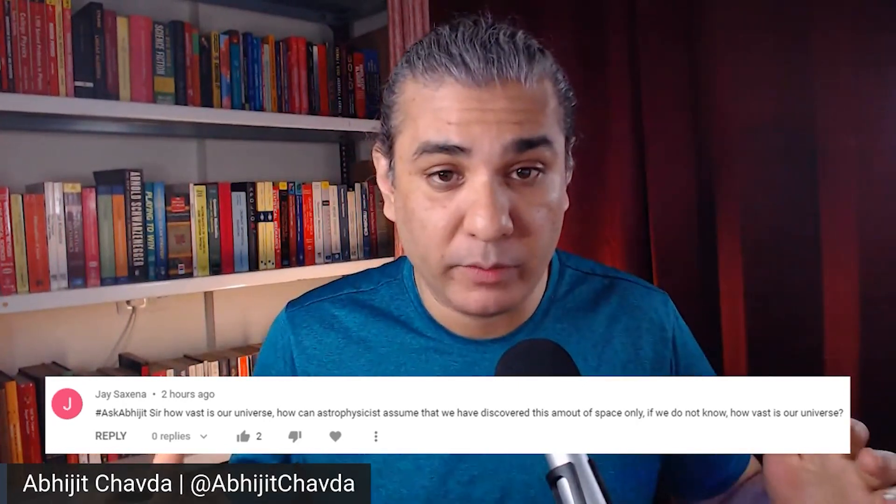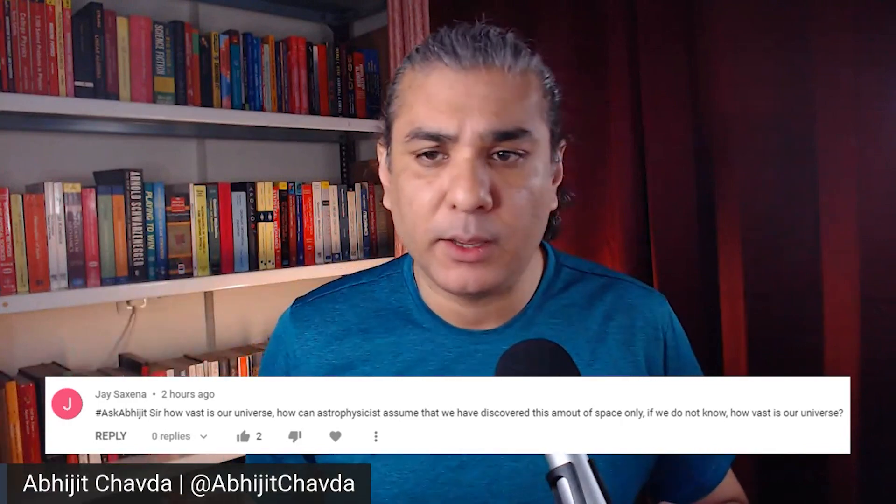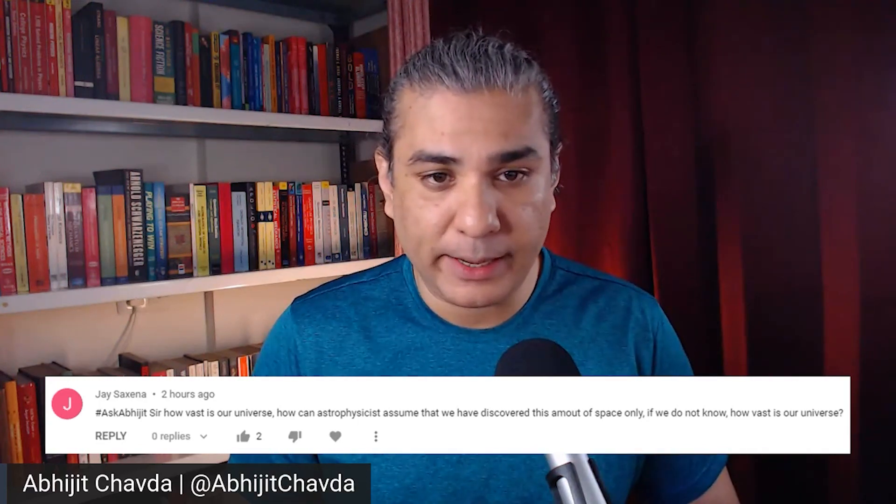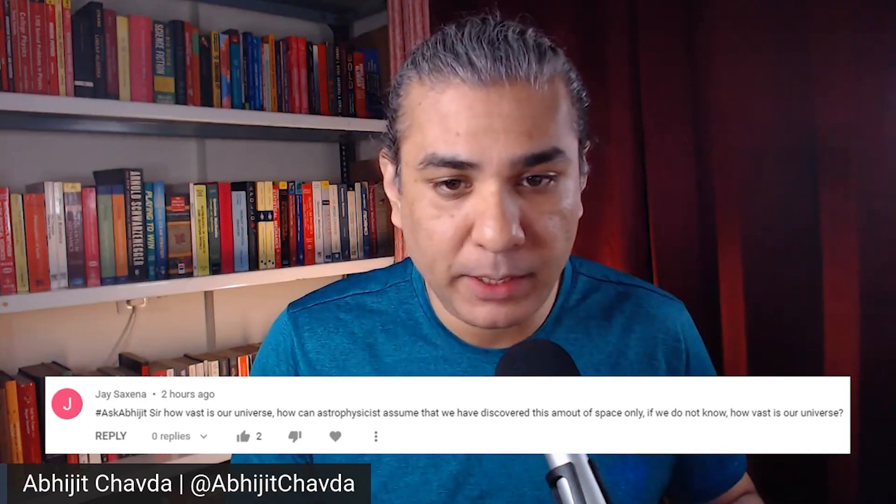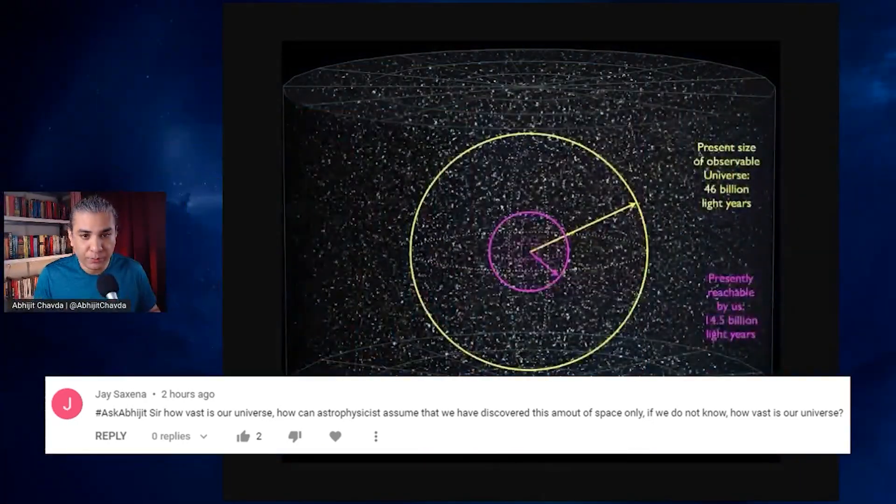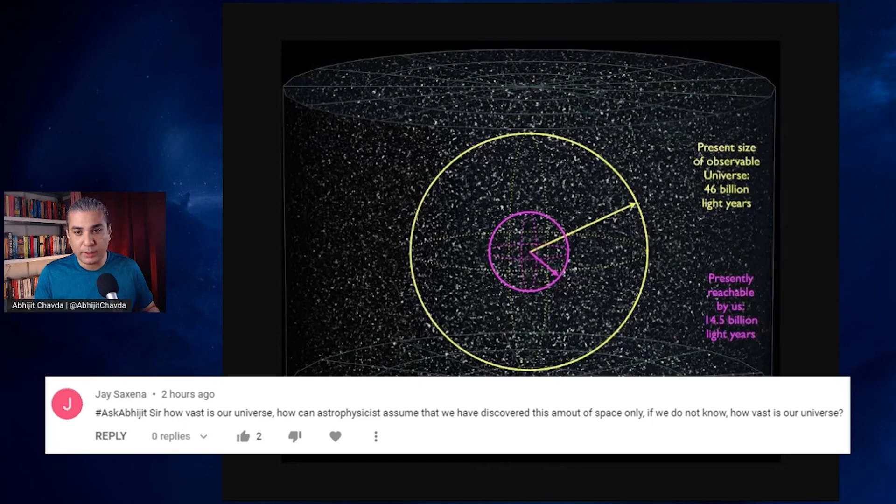We have the cosmic horizon, which is the observable universe, the furthest we can look with any instrument that we have, and that's about 46 billion light years away. Let me share an image with you. This here is an approximate representation of this. The present size of the observable universe is about 46 billion light years. We know this because that's how far we can see.